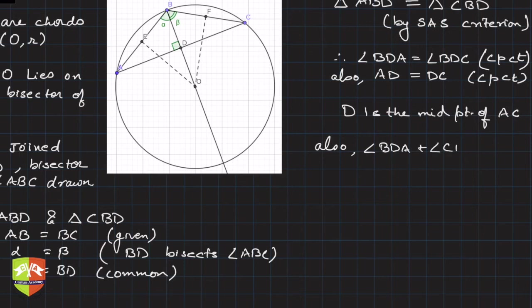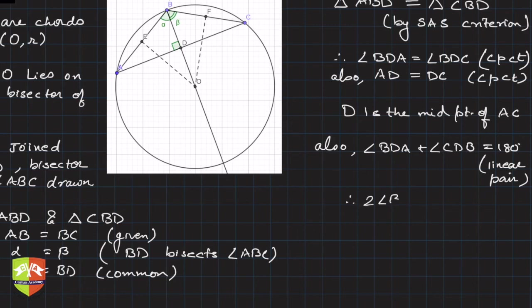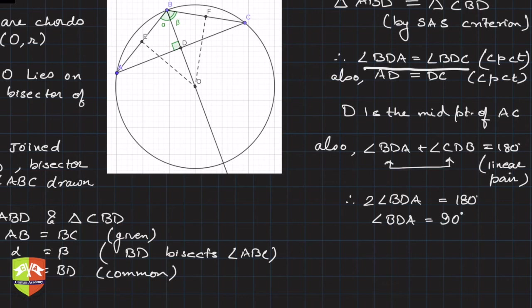Also, angle BDA plus angle BDC equals 180 degrees — linear pair, since the total angle on one line at a point is 180 degrees. Therefore, twice angle BDA equals 180 degrees, because angle BDA and angle BDC are equal. Hence, angle BDA equals 90 degrees.